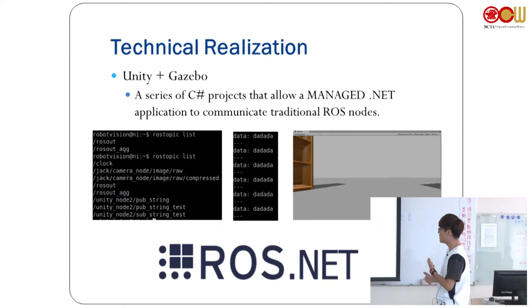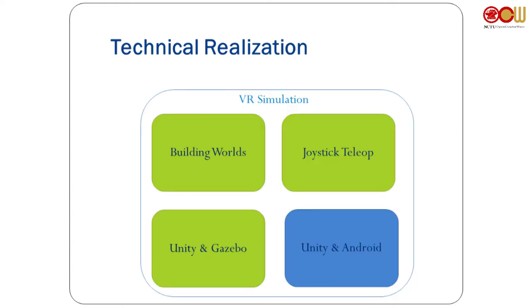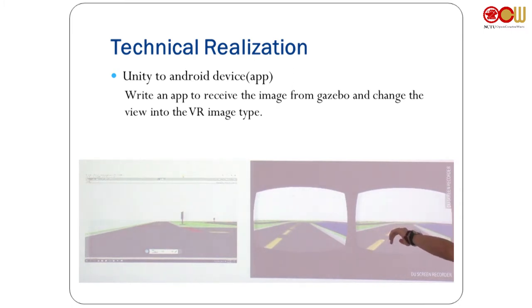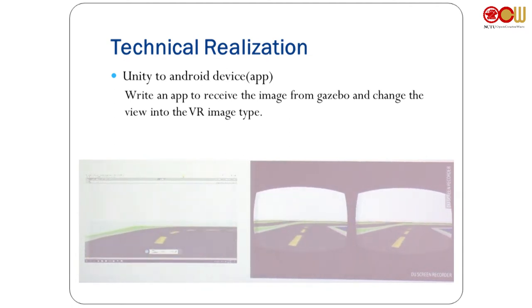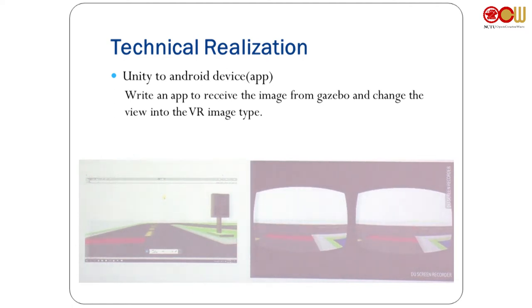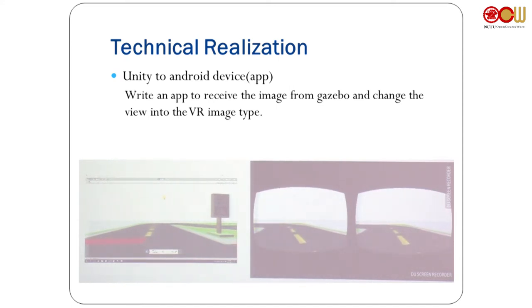The fourth part is the Unity and Android app. After receiving the image from Gazebo in Unity, we process it — the left side shows the raw image from Gazebo, and after processing it becomes the right part, which is what you see in the VR device. We also had to adjust the resolution, because at 614x480 the app would crash. We reduced it to 240x120, which is stable but produces a less clear image.